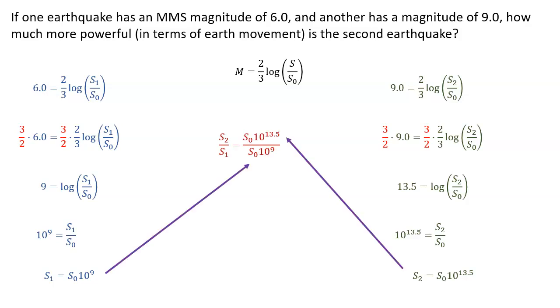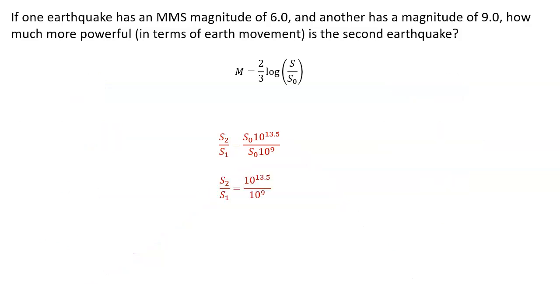So we'll take those values that we just found for s2 and s1, and find the ratio of the two. And you'll notice that the s0 term is going to cancel.